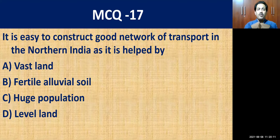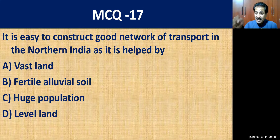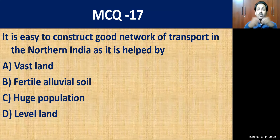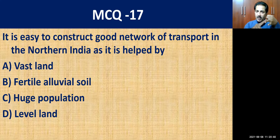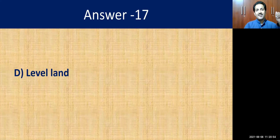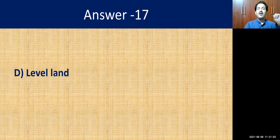MCQ question number seventeen: it is easy to construct a good network of transport in Northern India as it is helped by — vast land, fertile alluvial soil, huge population, or level land? The correct answer is level land. Because of the flat or level land, railways and roadways are easily constructed, helping to maintain a good transport network.